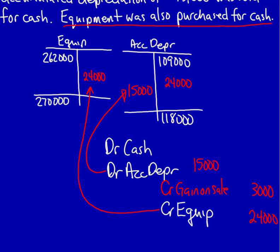The next step is to solve for all the unknowns. Cash can be calculated easily — cash is $12,000. Even if the additional information didn't explicitly state that equipment was also purchased, we solve for that amount just to double-check, and we can see that this comes to $32,000. Everything is now solved for.